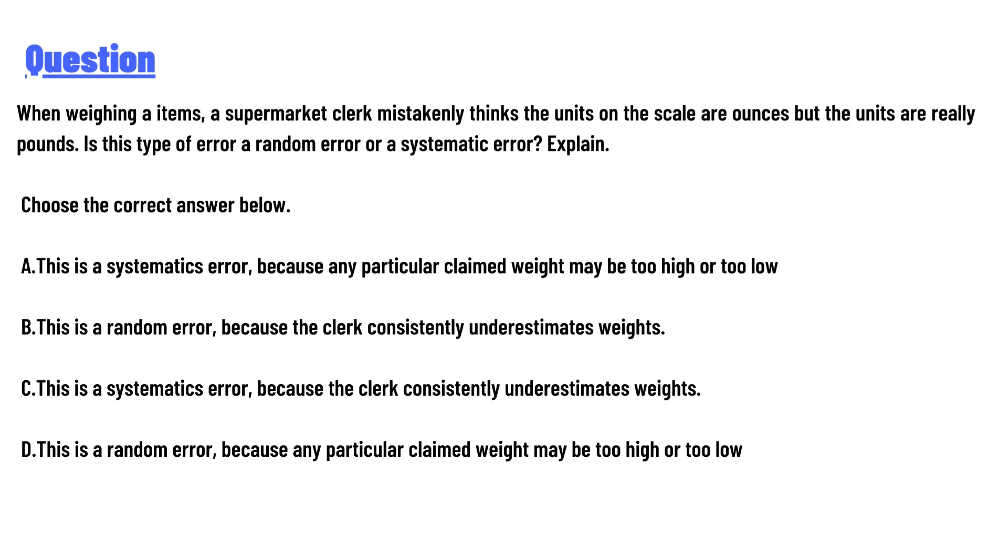thinks the units on the scale are ounces but the units are really pounds. Is this type of error a random error or a systematic error? Explain. Choose the correct answer below. A: This is a systematic error because any particular claimed weight may be too high or too low.